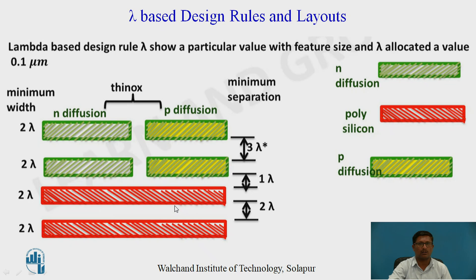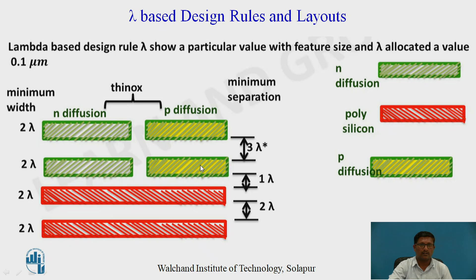For N diffusion and P diffusion: the minimum width is 2 lambda for both. The separation distance between two N diffusion regions is 3 lambda, and similarly between two P diffusion regions is 3 lambda. For polysilicon: the width is 2 lambda, and the separation distance between two polysilicon lines is also 2 lambda. The separation distance between N diffusion or P diffusion and polysilicon is 1 lambda.